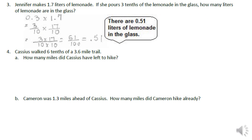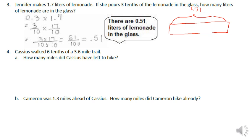Word problem: Jennifer makes 1.7 liters of lemonade. If she pours 3 tenths of the lemonade into a glass, how many liters of lemonade are in the glass? Here is our tape diagram showing 1.7 liters divided into tenths.